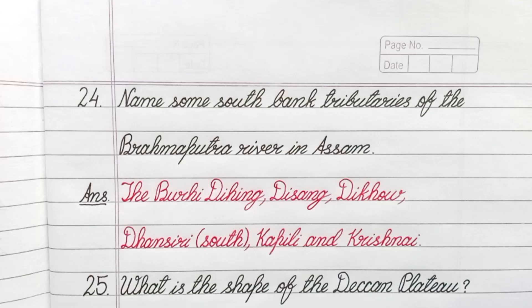Question number 24. Name some South Bank tributaries of the Brahmaputra River in Assam. Answer: the Buridihing, Dishang, Dikho, Thansiri South, Kapili and Krishnai.